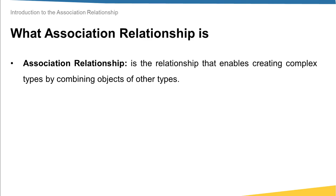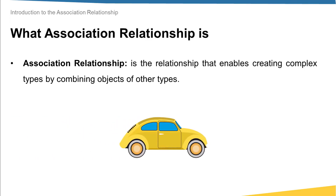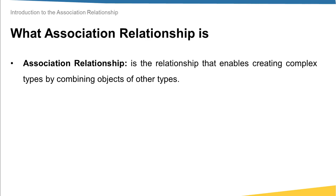So what is association relationship? Simply, this relationship enables creating complex types by combining objects of other types. As we have seen in the introduction example, a car can have wheels, which means one object has attributes as objects from other data types.